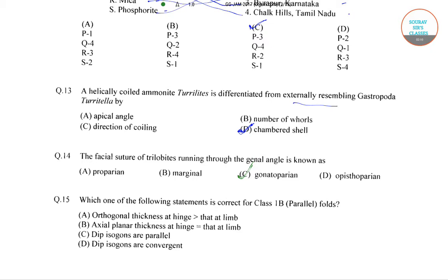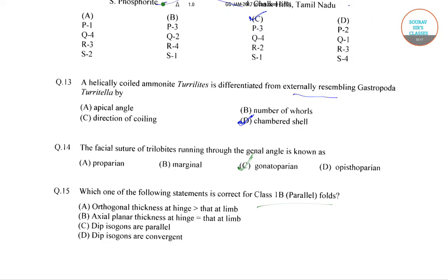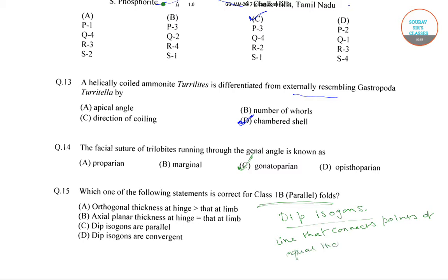In the next question: which one of the following statements is correct for Class 1b, that is parallel folds? In Class 1b parallel folds, the dip isogons — which are lines that connect points of equal inclination — are key to understanding the fold geometry.